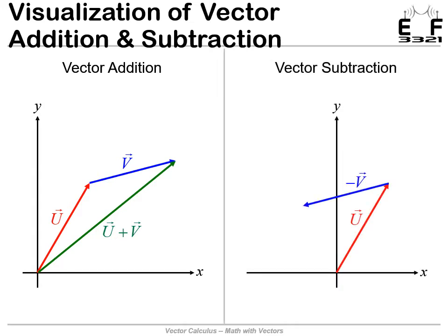We can do a very similar thing for vector subtraction. We'll draw that first vector U again. The second vector we will invert, so now we're sort of back to addition, just with one of those vectors made negative, drawn from the tip of the first vector. The difference — the sum of those two where one is negative — is the vector connecting the beginning of the first vector to the tip of the second vector. That vector difference also makes a triangle.